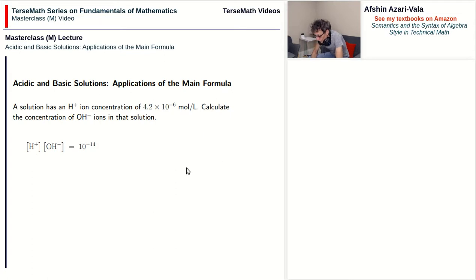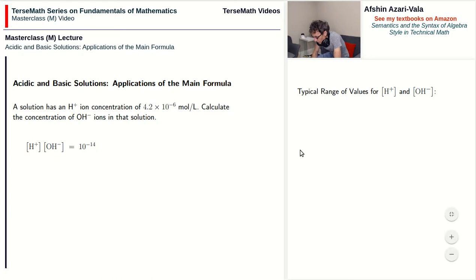Before we get into solving this problem, it's always a good idea to know what range of values are acceptable as a solution, so that if you compute a value that's way off, you would know something is not right. The concentration of H+ and OH- ions typically ranges from some decimal times 10 to the power of negative 14 up to some number times 10 to the power of negative 1.